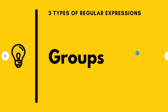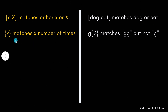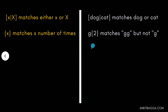Moving on to the third type: groups. Groups are simply two types of regular expressions. Square brackets group terms — for example, [x|x] using the pipe for OR would match x or x. Square brackets are used to group two terms you want to match. Then there are curly brackets: curly bracket with a number matches exactly that many times. So g{2} would match double g's but not a single g, meaning g can appear exactly twice in the string.